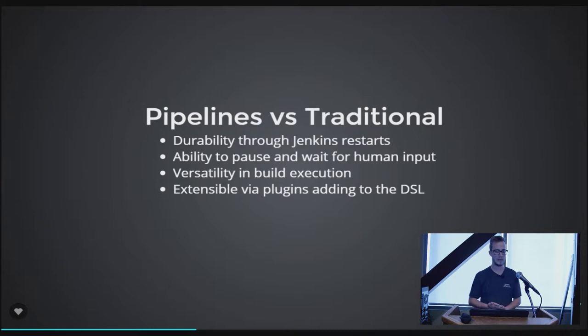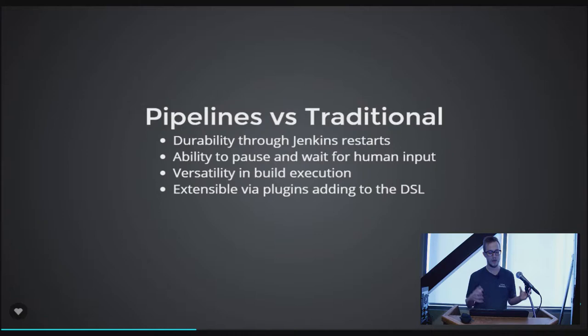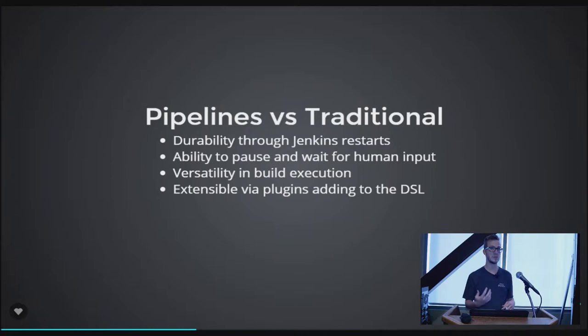Comparing pipelines to traditional jobs: pipelines give you durability. Say you have a large Jenkins instance with hundreds of executors running builds, regression tests, maybe long-term tests that take a week to execute. Traditionally, if a Jenkins instance goes down, any running builds fail and get aborted — they won't come back when Jenkins comes back up.